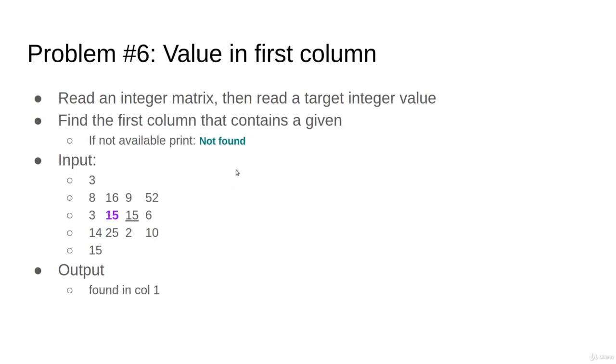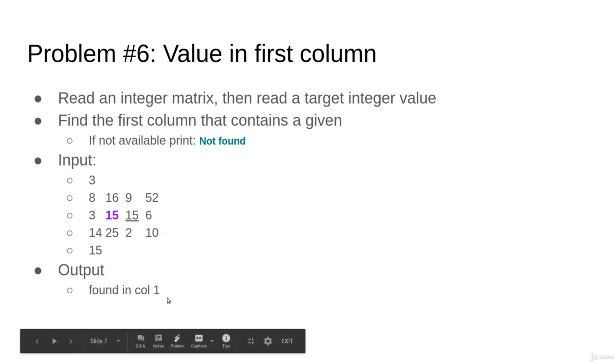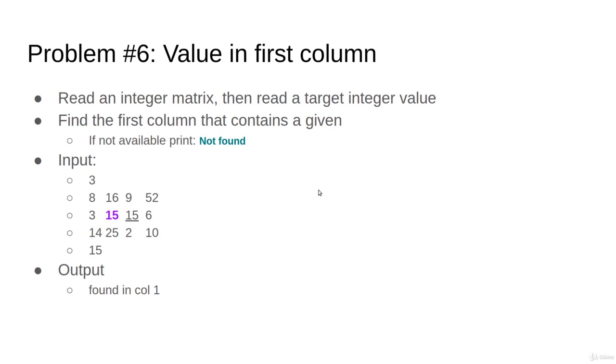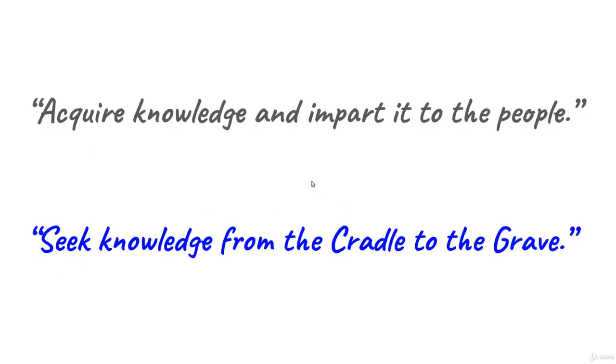You read an integer matrix and also you read the target value. So here we read the integer matrix and then we read the target value, which is 15. Find the first column that contains a given target value, and if not found, just print that not found. So we found it here, found in column number one. Try to do that in a smart way. This is the target of this assignment. That's all.